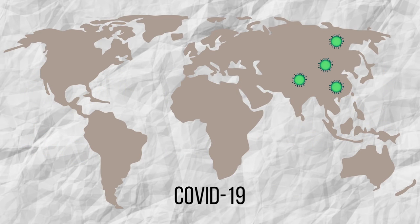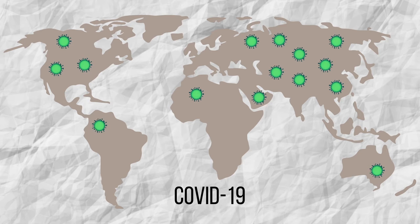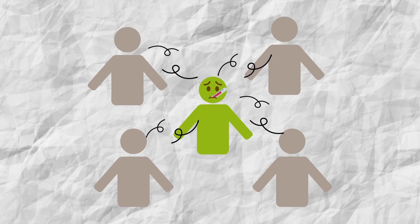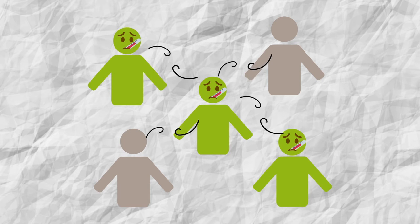When studying the spread of disease through these models, several factors must be considered, such as the average number of contacts per day an infected person has and the proportion of contacts that eventually result in infection.